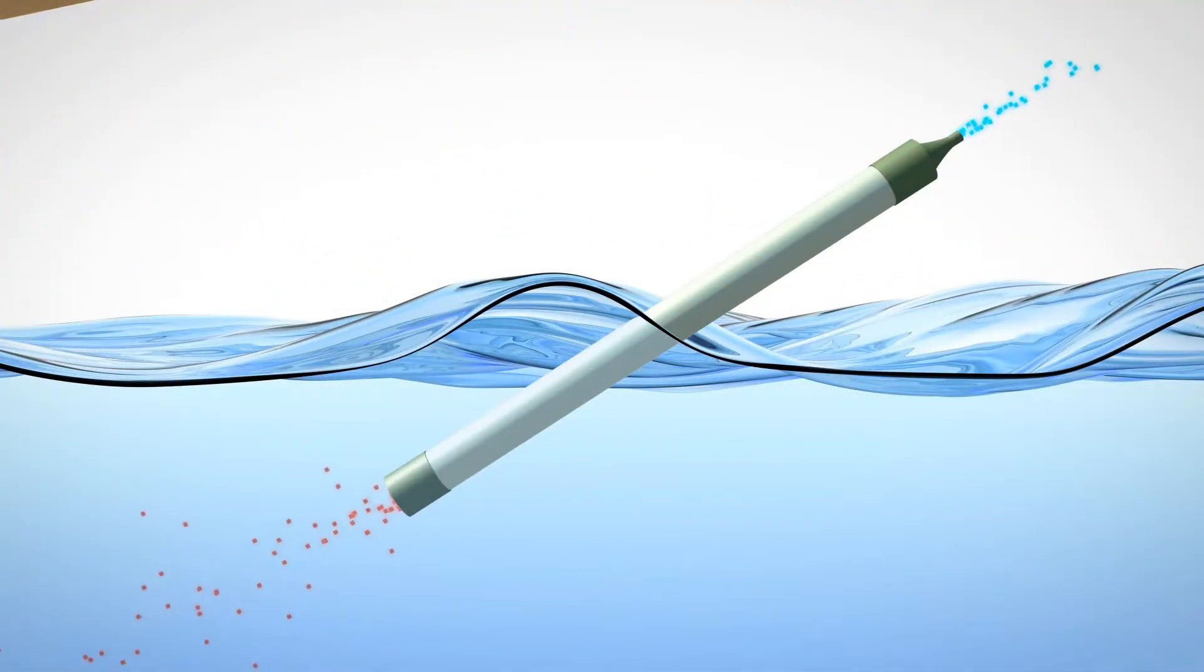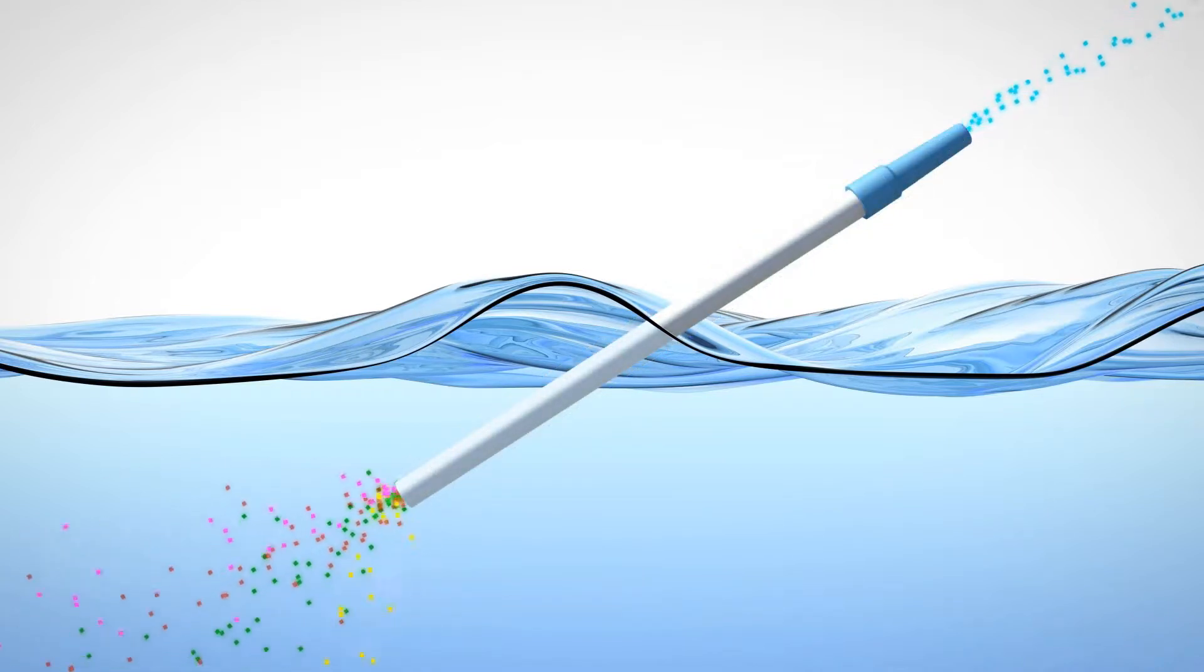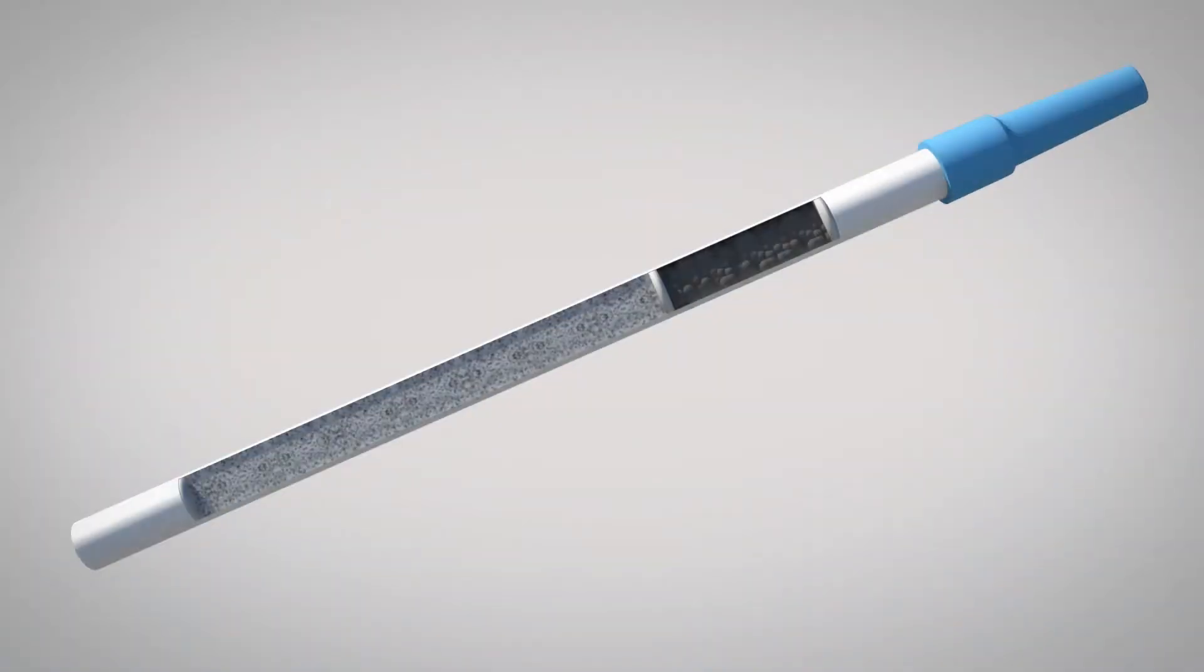Unlike other alternatives that use nano filtering systems and only remove bacteria, Clean Sip removes the whole array of unwanted nasties from your water. It uses state of the art technology comprising of three micro filters, an activated charcoal filter and a patented high purity metal alloy.